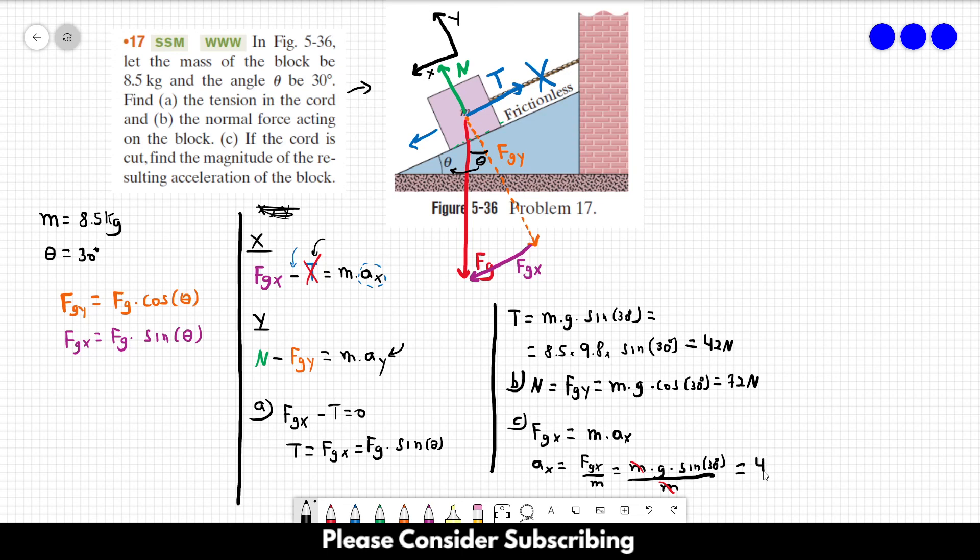And then we get a_x = 4.9 meters per second squared. So this is the acceleration of the block if the chord is cut.